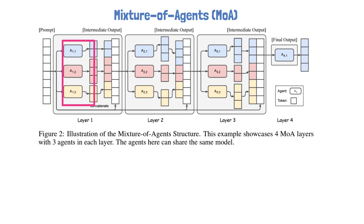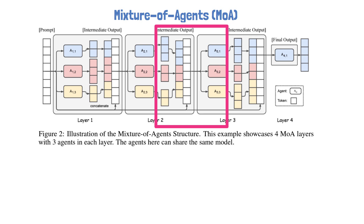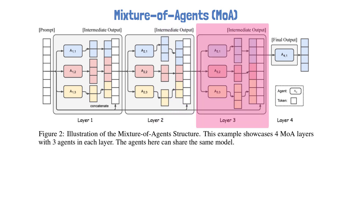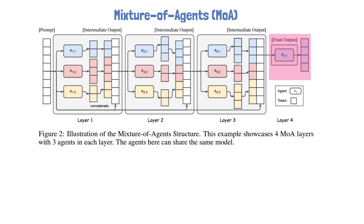The responses from the LLMs in the first layer, together with the input prompt, are passed to the second layer. The second layer also has 3 LLMs, which can either be the same LLMs from layer 1 or other LLMs. The second layer then operates in a similar manner to the first and passes results to the third layer, which in this example also has 3 LLMs. Then the results reach the final layer and there is only one LLM in this case. That LLM gets the input prompt and additional responses gathered along the way from previous layers and determines the final output.